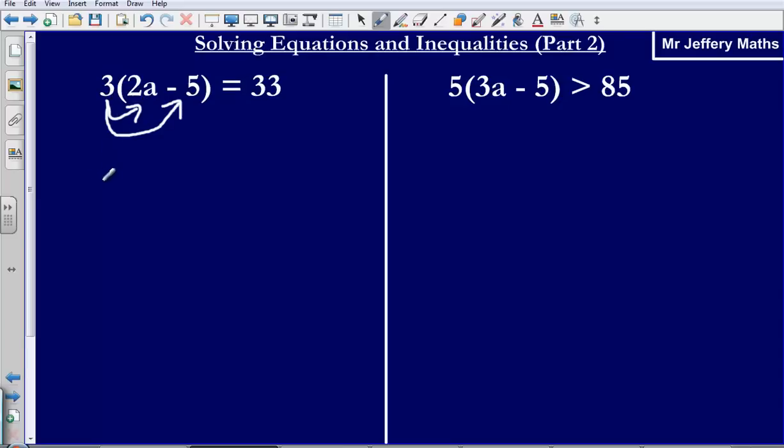So 3 multiply by 2a, that's going to give me 6a. Then 3 multiplied by negative 5, that's going to give me negative 15. And we can say that that is equal to 33. So my first step really is just to multiply out this bracket. If you're not sure on how to do this then see the other videos that are available on the channel.